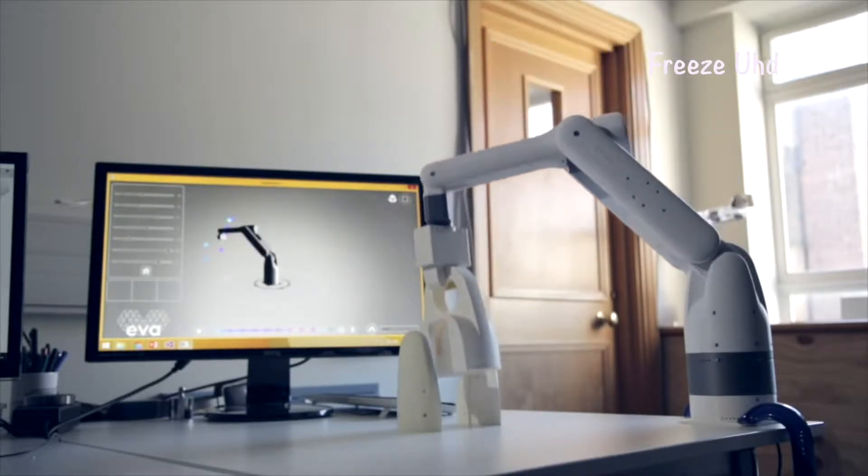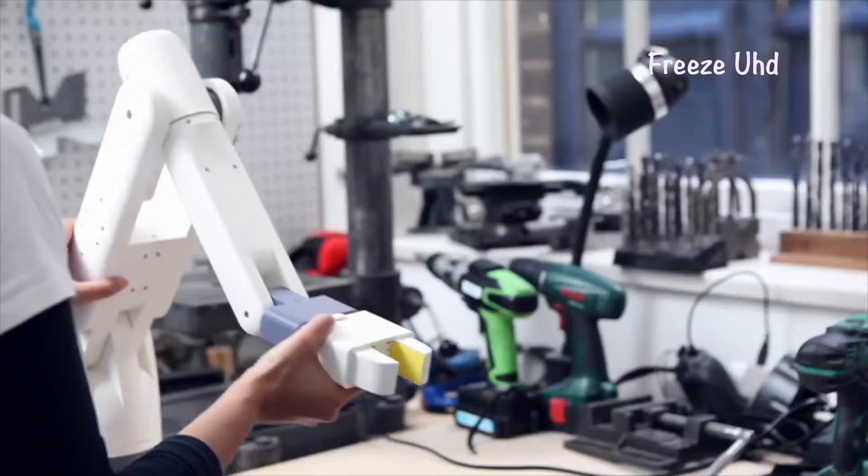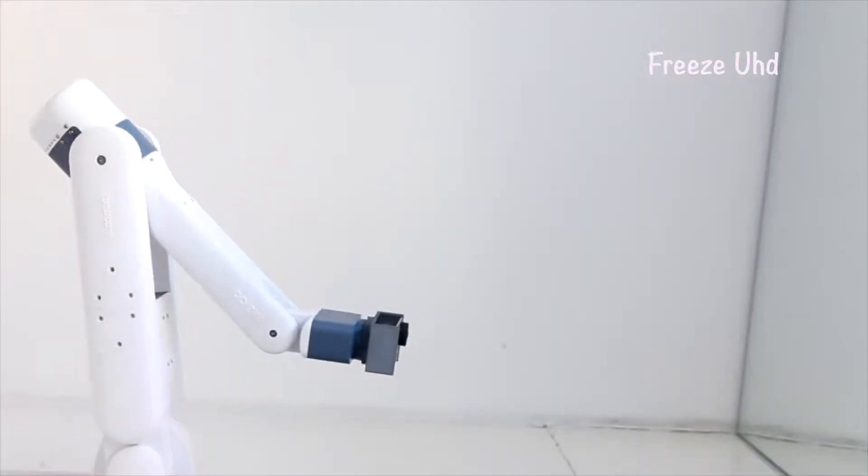The software is called Choreograph, and we have made the software so simple, you can practically do it without any programming. You can literally physically move the robot from one point to the other, and it records the motion, and it just plays it back flawlessly.